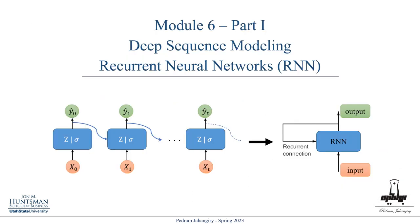We're going to have three theory lecture videos for this module. In part 1, I will talk about Deep Sequence Modeling, starting with the very basic, simple recurrent neural network. In part 2, we explain why we should go beyond RNN and what are the limitations. We talk about gated cells and specifically LSTM architecture. And finally, in part 3, we're going to apply Deep Sequence Modeling to text data and investigate natural language processing models.